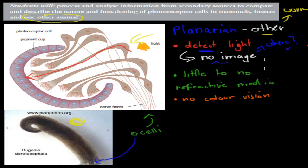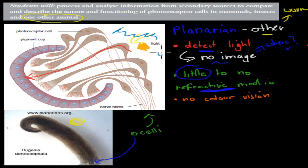So that's all it does — it sees light or it sees no light, but it has no image. And because of that, it also has little to no refractive media. Remember, that was the cornea, the lens, the aqueous and vitreous humor. I say 'little' because there's a bit of liquid around to allow a bit of bending to make sure light hits that area. But no precise bending, because it doesn't have to be that precise — it doesn't make any clear image. That's the difference to the mammalian eye: it has little to no refractive media and does not show any image, whereas the mammalian eye does.